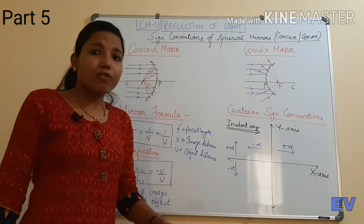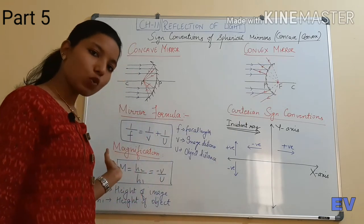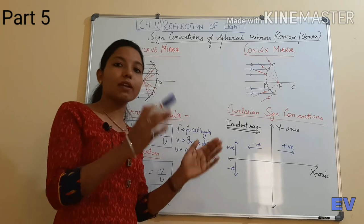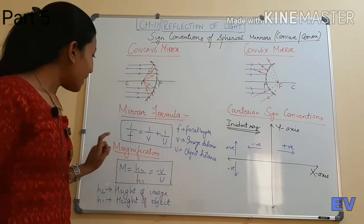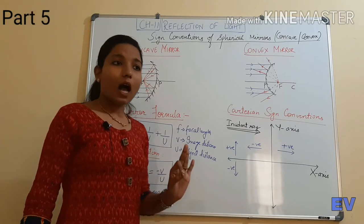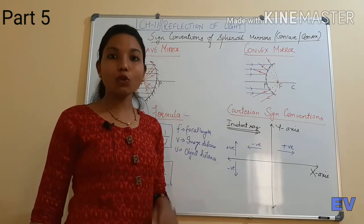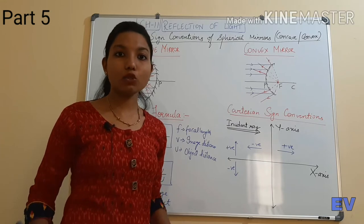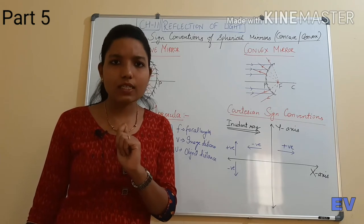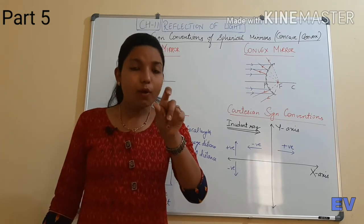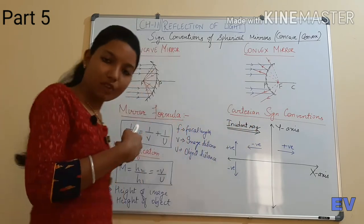If a question asks to find focal length and gives you object distance and image distance, you can easily find it using the mirror formula. Next, magnification tells you how big or small the image is compared to the object. We say 'I want a magnified image' — that is why we use a magnifying glass, to see objects more clearly and get a larger image.